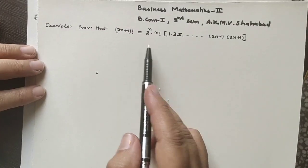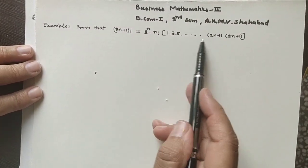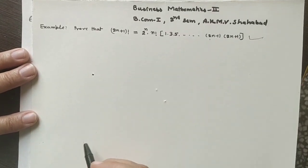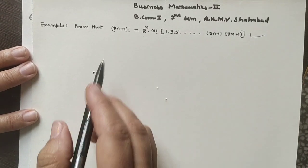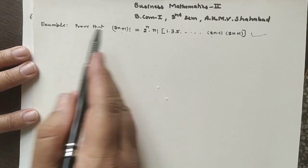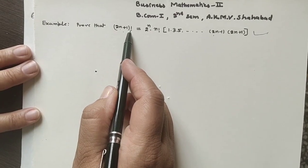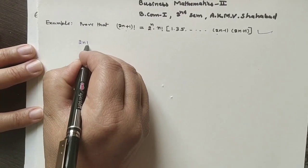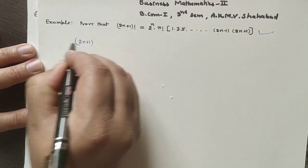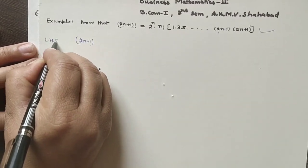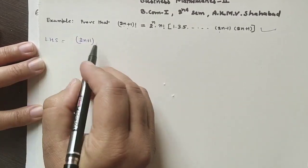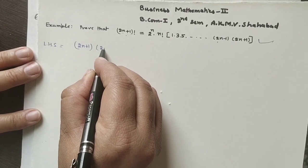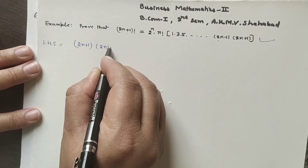There is one more question, which we have not discussed before — it differs from the (2n)! proof done earlier. Here we need to prove a similar result for (2n plus 1)!. We take the left hand side: (2n plus 1)! equals (2n plus 1) into (2n)!.